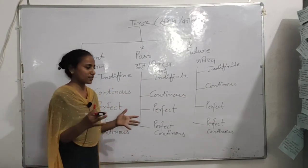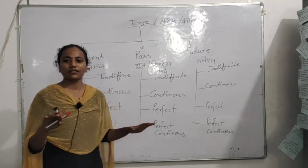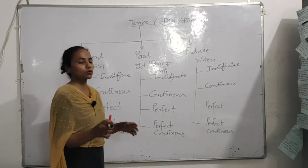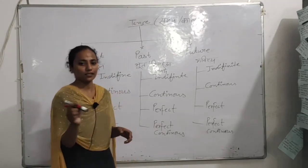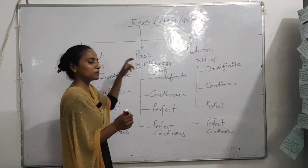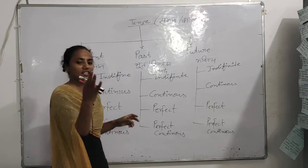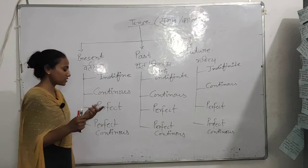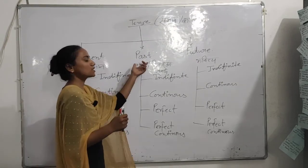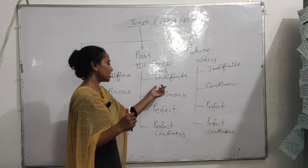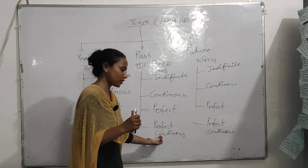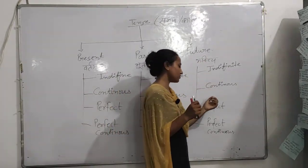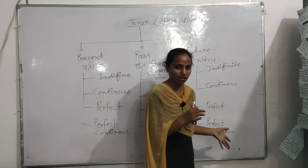If you are studying for the first time, let me explain with an analogy: a father named TENSE had three sons — Present, Past, and Future. उसी तरह से Past ने भी अपने बेटों का नाम रखा: Past Indefinite Tense, Past Continuous Tense, Past Perfect Tense, Past Perfect Continuous Tense। And Future named its four sons: Future Indefinite Tense, Future Continuous Tense, Future Perfect Tense, Future Perfect Continuous Tense.